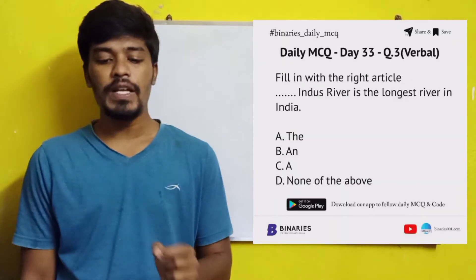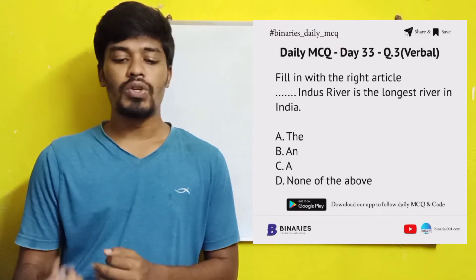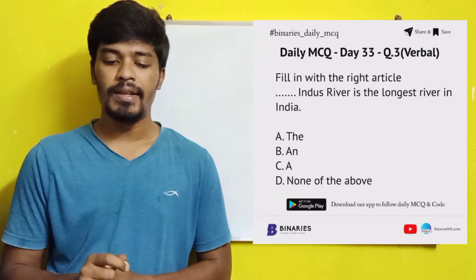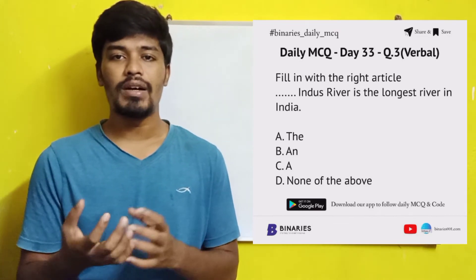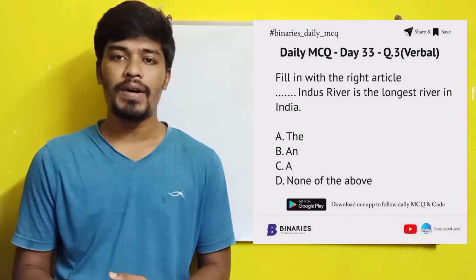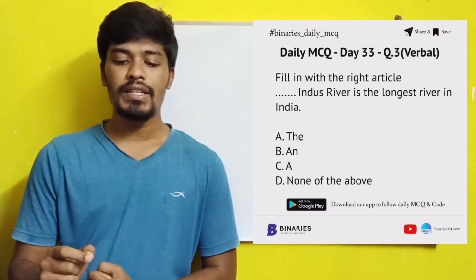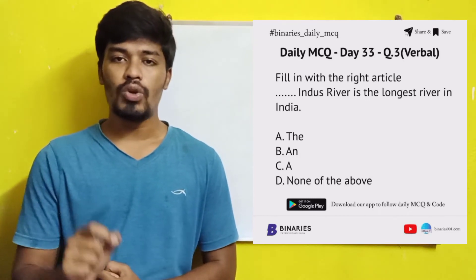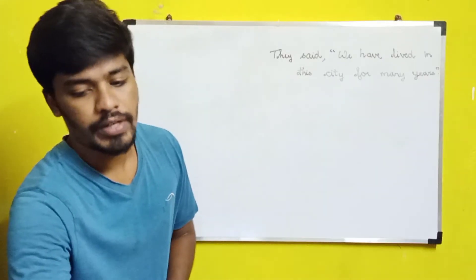The third question is fill in with the right article. The sentence given is: "___ Indus river is the longest river in India." Usually for unique things like the Himalayas or any river's name, when we refer to something uniquely, we use "the". The Indus river is a unique river, so "the" is the correct answer for the third question.